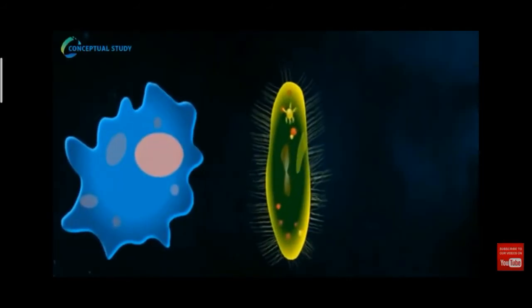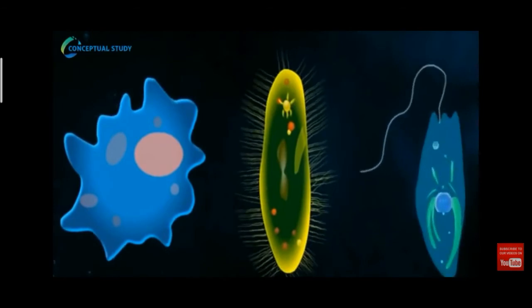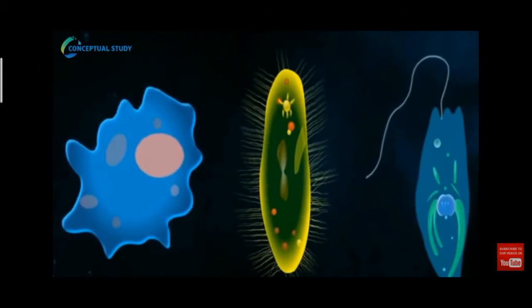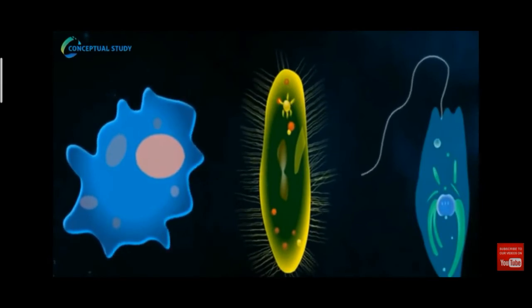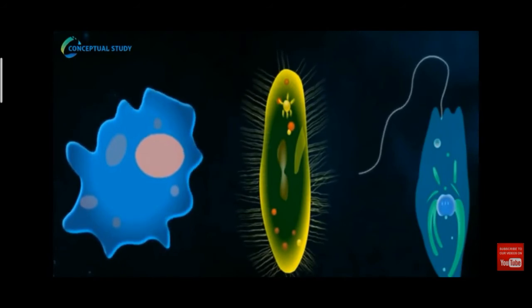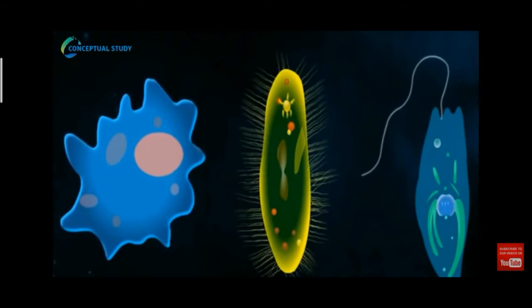Another method of asexual reproduction is binary fission. The organisms which reproduce by binary fission are amoeba, paramecium, and euglena. In binary fission, two organisms are formed from a single parent. Let's take the example of amoeba.